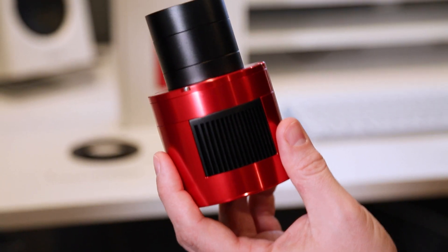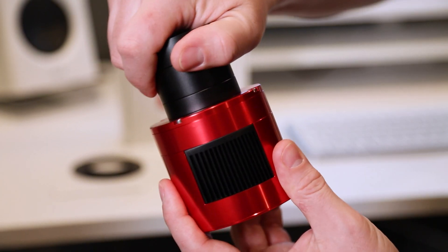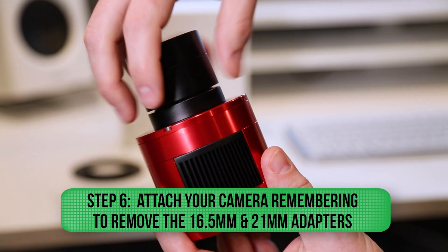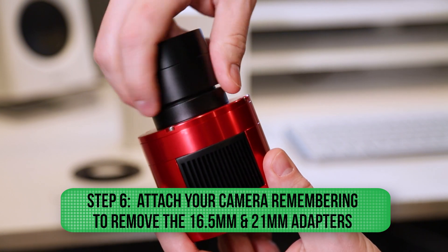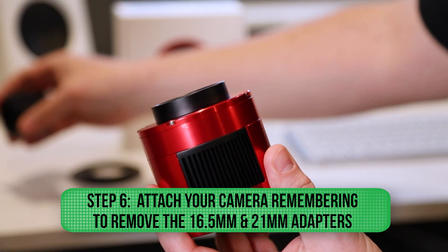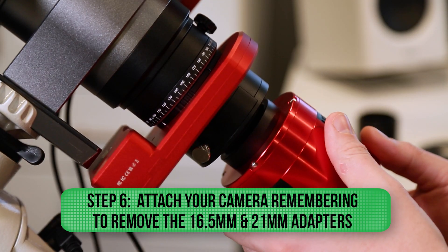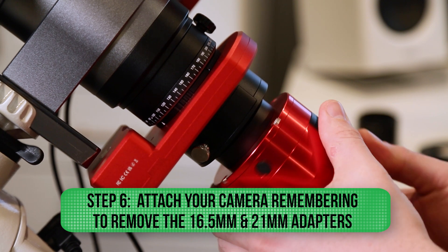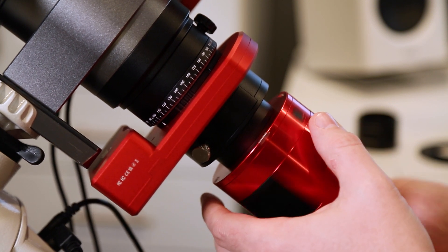Okay, so now we're ready to attach the camera. We have to remove the 16.5 and 21 millimeter adapters that come with the camera. And then we can thread that directly onto the filter drawer, which has M42 threads.